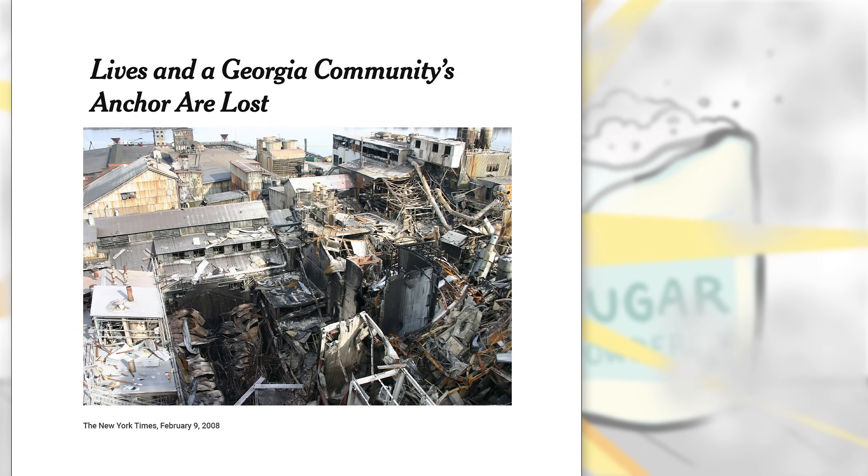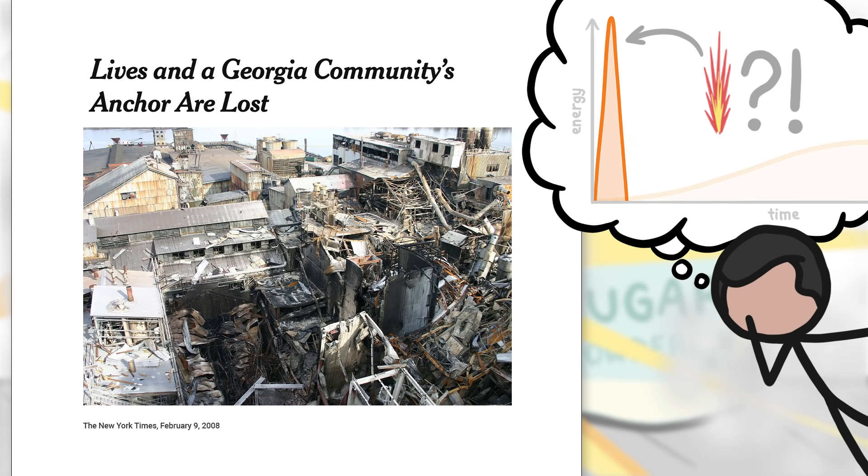In 2008, a sugar dust explosion leveled a Georgia sugar refinery and killed 14 people. But why is releasing energy quickly so destructive?